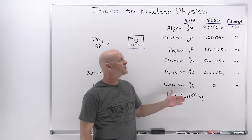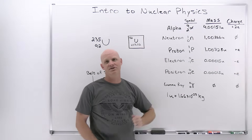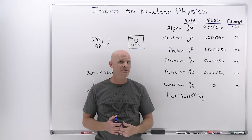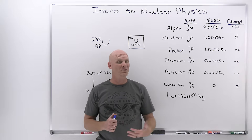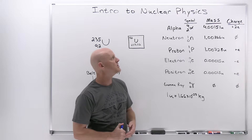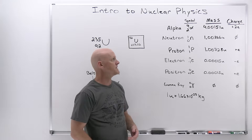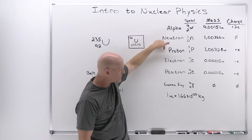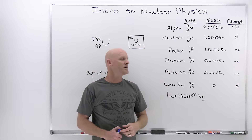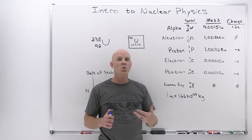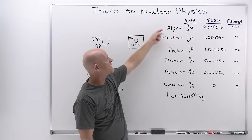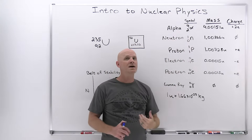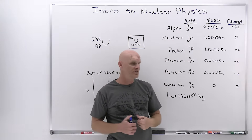Let's start off with a list of nuclear particles you're likely to encounter in this chapter. If you've got any background in chemistry, some or all of these might be familiar. We're going to start with the heaviest of the nuclear particles and work our way down to the lightest, and we'll see that we've written them in this order for a reason. We'll start with the alpha particle. For a nuclear symbol, it works the same way as it does for a chemical symbol.